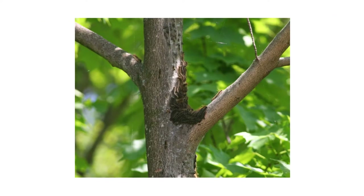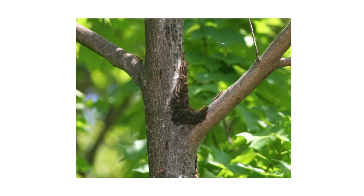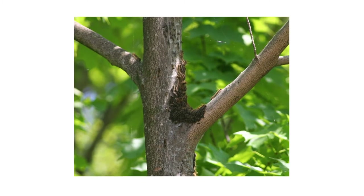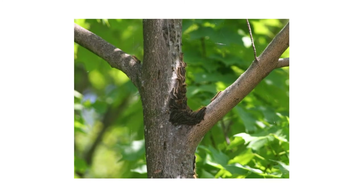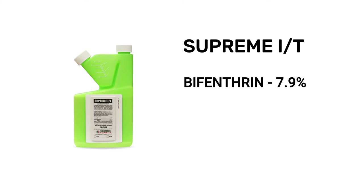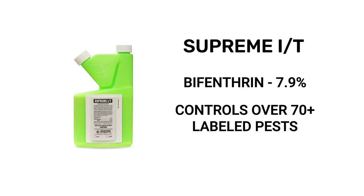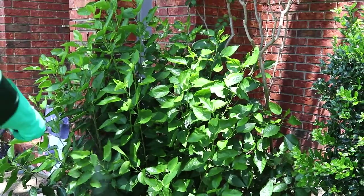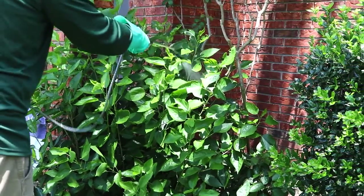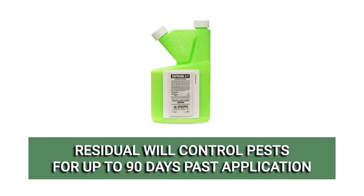If you're dealing with a heavy infestation and wish to avoid over-pruning, you can scrape away pests, webs, and eggs with a scraping tool. Once you've gotten rid of any visible pests and cleared away any webs, you can apply a residual insecticide like Supreme IT. Supreme IT is a bifenthrin-based liquid insecticide concentrate labeled to treat over 70 different pests, including tent caterpillars. When applied, Supreme IT will leave a residual chemical barrier that will control pests for up to 90 days after application.